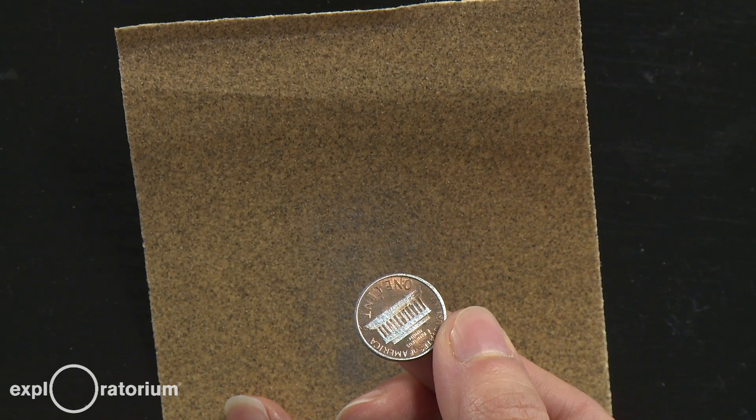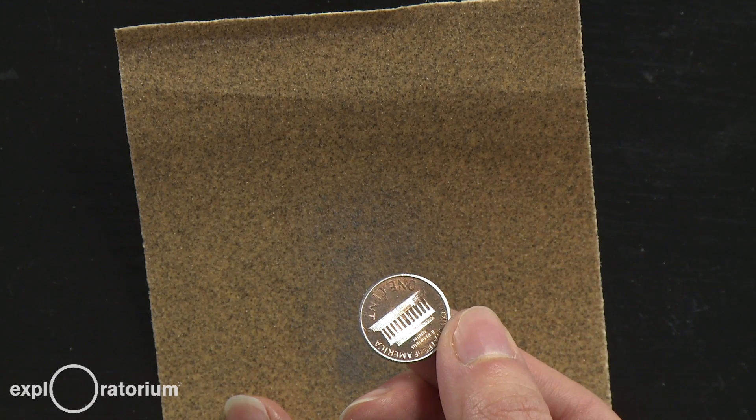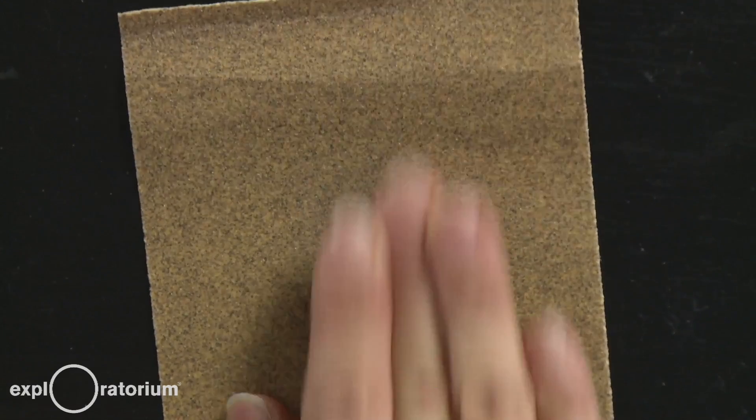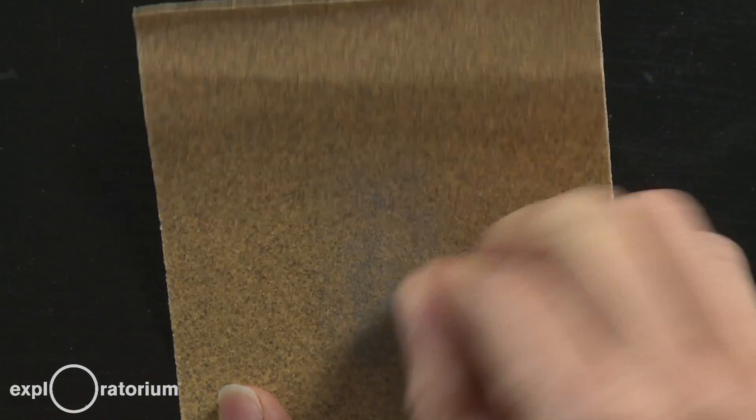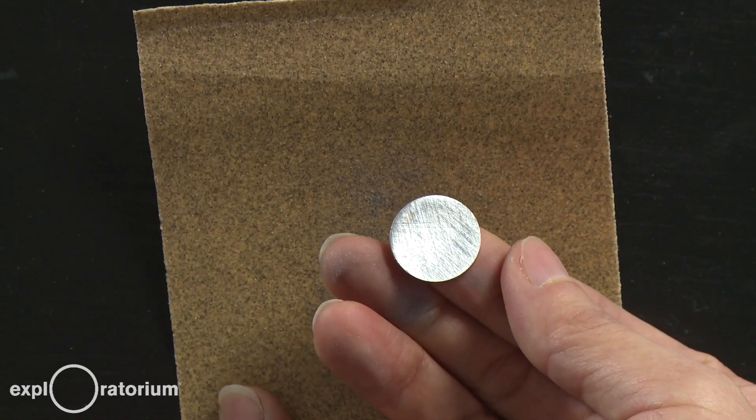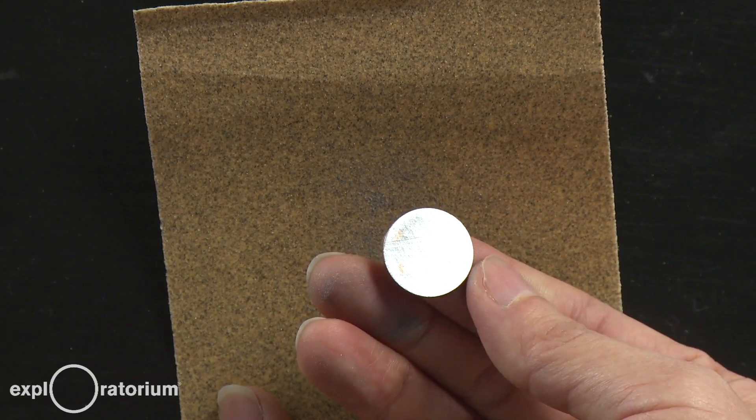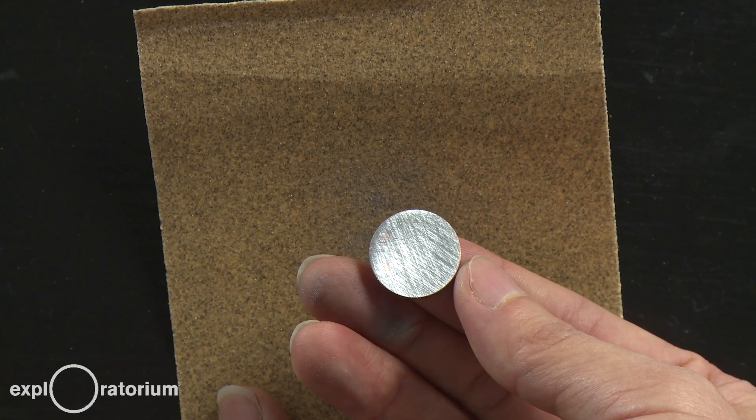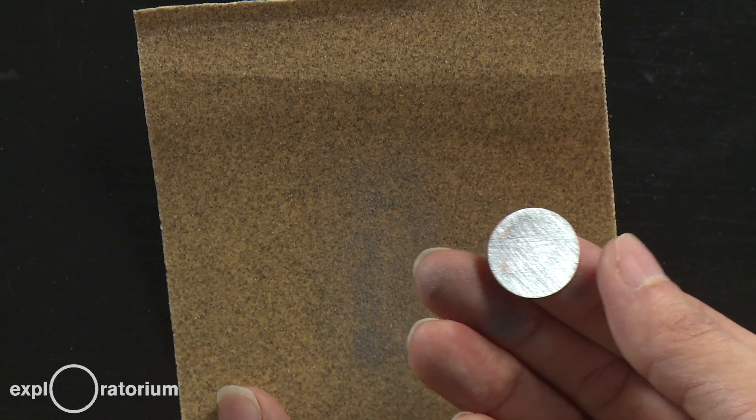But there's still quite a bit of copper, so we need to keep sanding until the entire face of the penny is zinc. Eventually, you'll see that you've sanded off the entire copper surface of the penny. The whole face is this shiny silvery zinc color. So go ahead and do that with the other three pennies that were made after 1982.